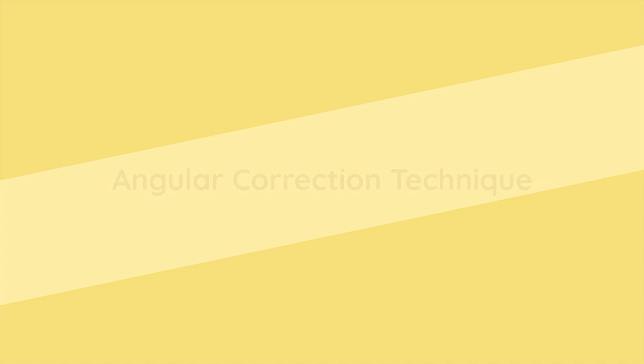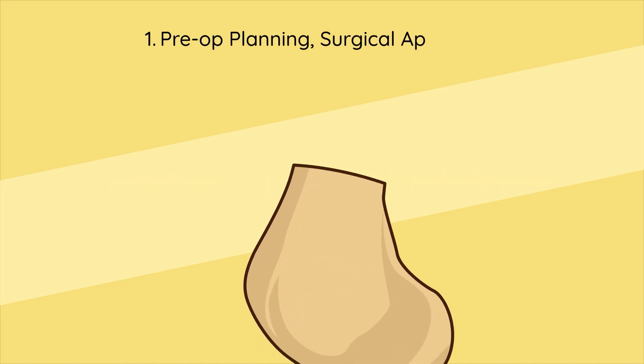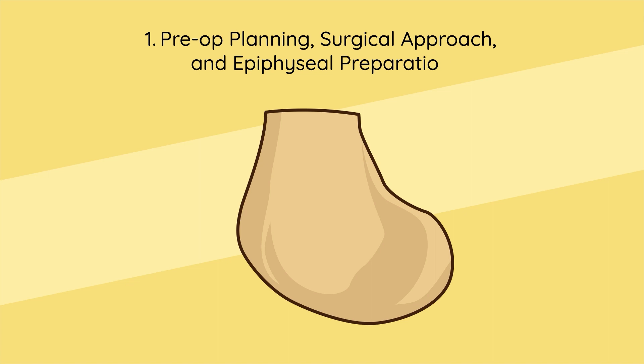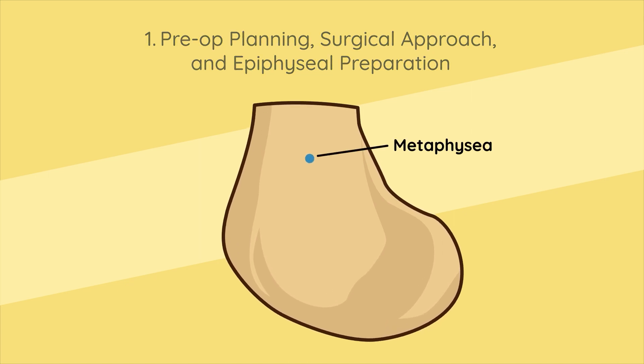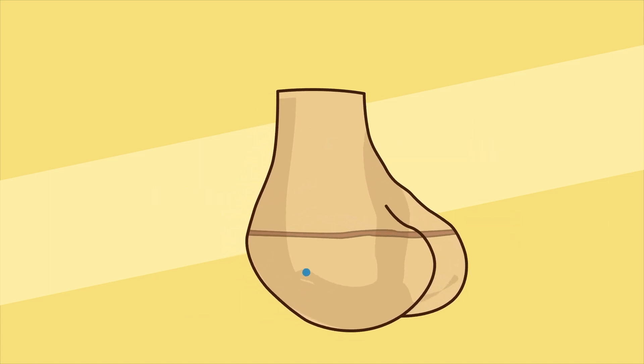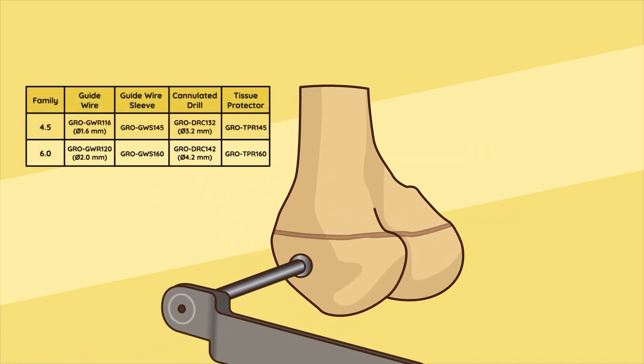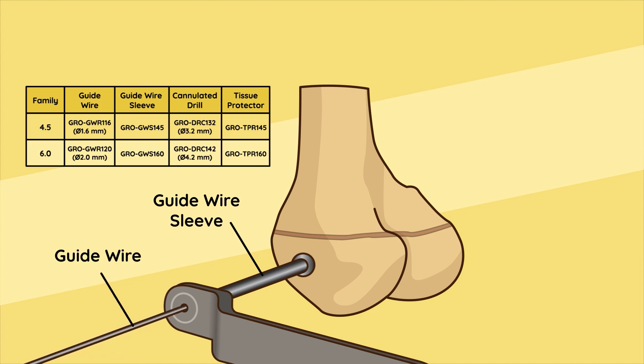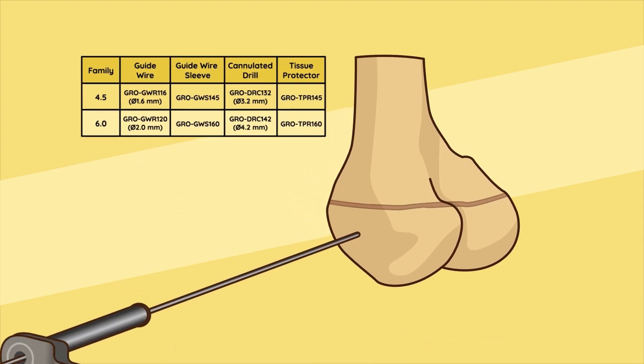Angular correction technique: Step one - pre-op planning, surgical approach and epiphyseal preparation. After marking and dissecting the epiphyseal and metaphyseal screw locations above and below the growth plate, prepare the screw hole with the appropriate guide wire and drill.